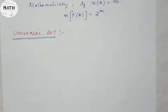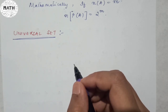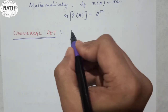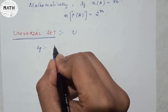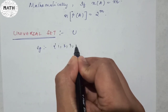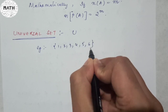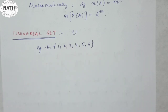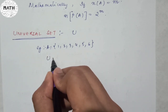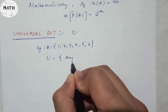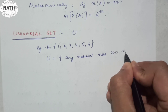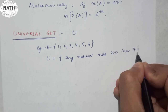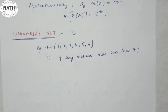The next topic is the universal set. In simple terms, the universal set depends upon the problem you are dealing with. The universal set is denoted by capital U. For example, suppose the set A is equal to {1, 2, 3, 4, 5, 6}. The universal set would be any natural number less than 7. That would be your universal set.